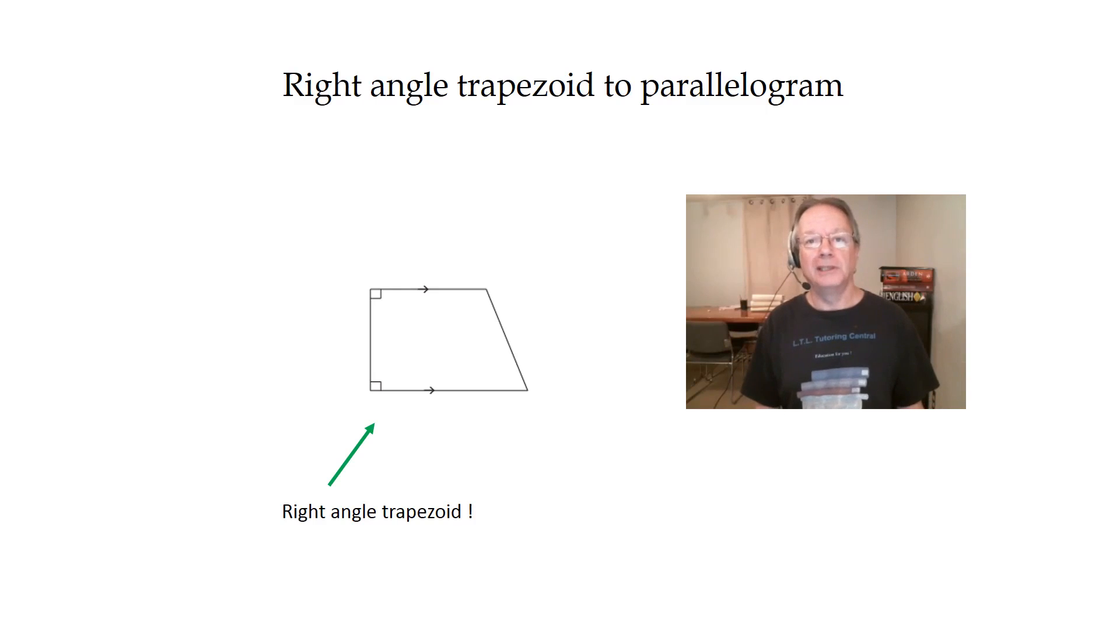Hi everyone, Ron here from LTL Tutoring Central. This little video is about how to take a right angle trapezoid, draw an identical one, and then connect them to make a parallelogram or a rectangle.